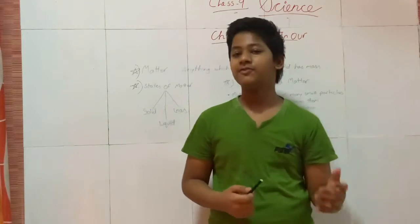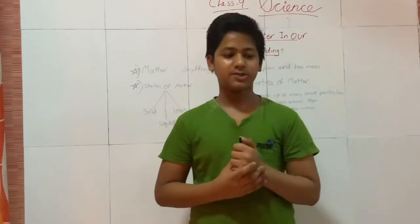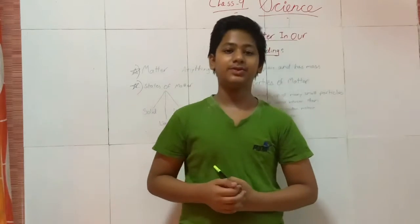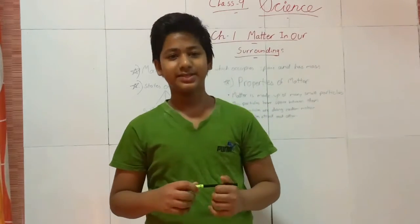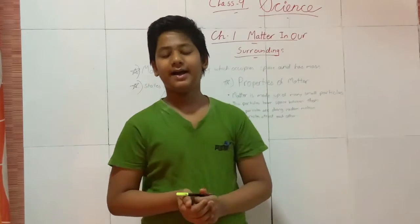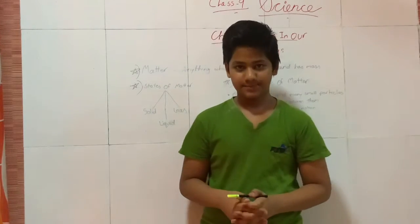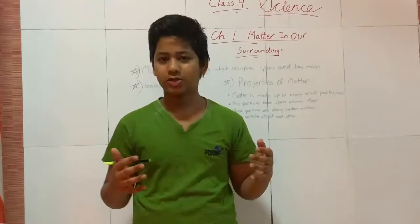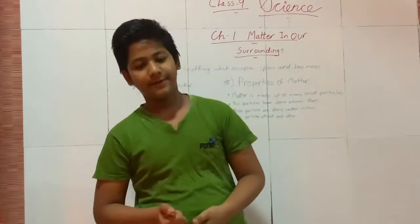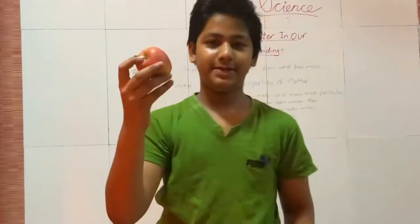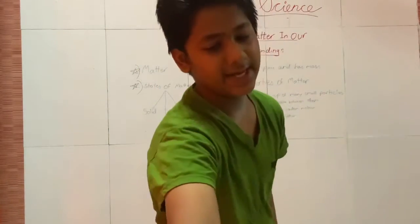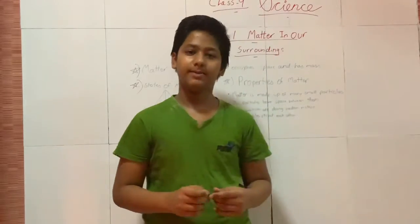This is the definition of matter, and these were some examples of matter. You can see anything around you which you can see is matter. Like for example, me — even I am having a mass and I am also occupying a space, so I am also matter. And for example, there is an apple here. This is also occupying space and has mass, so it is also matter.